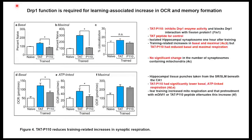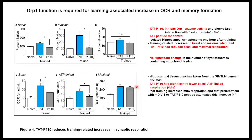This is another experiment using a second DRP1 inhibitor to confirm the previous results. The results are very similar — basal OCR, maximum OCR, co-localization, and ATP-linked all show the same pattern: trained mice have higher mitochondrial function, and DRP1 inhibition reduces it. The trained mice consistently show a high ratio of OCR and high mitochondrial function from this data.